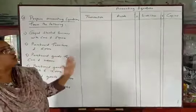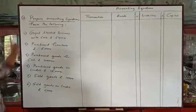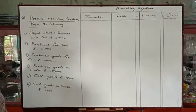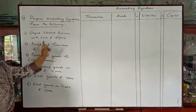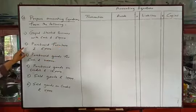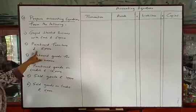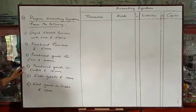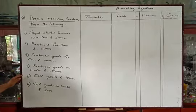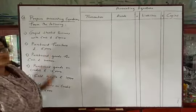Now we will solve the accounting equations. I have given one problem here: Prepare accounting equations from the following. There are 6 transactions. First, Gopal started business with cash rupees 50,000. Second, purchase furniture rupees 5,000. Third, purchase goods for cash rupees 20,000. Fourth, purchase goods on credit rupees 15,000. Fifth, sold goods rupees 10,000. And the last transaction is sold goods on credit rupees 5,000.